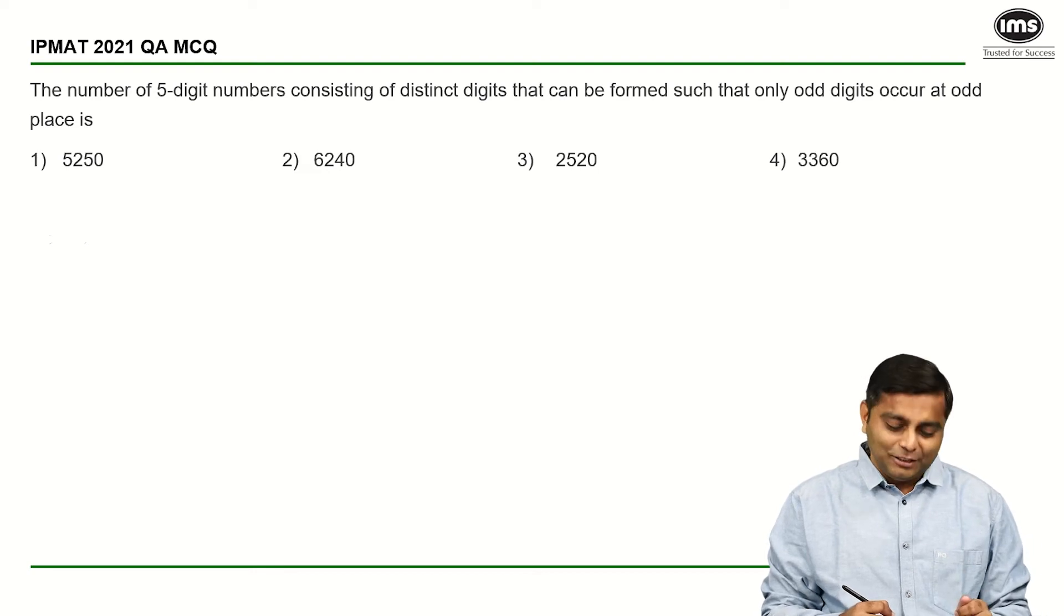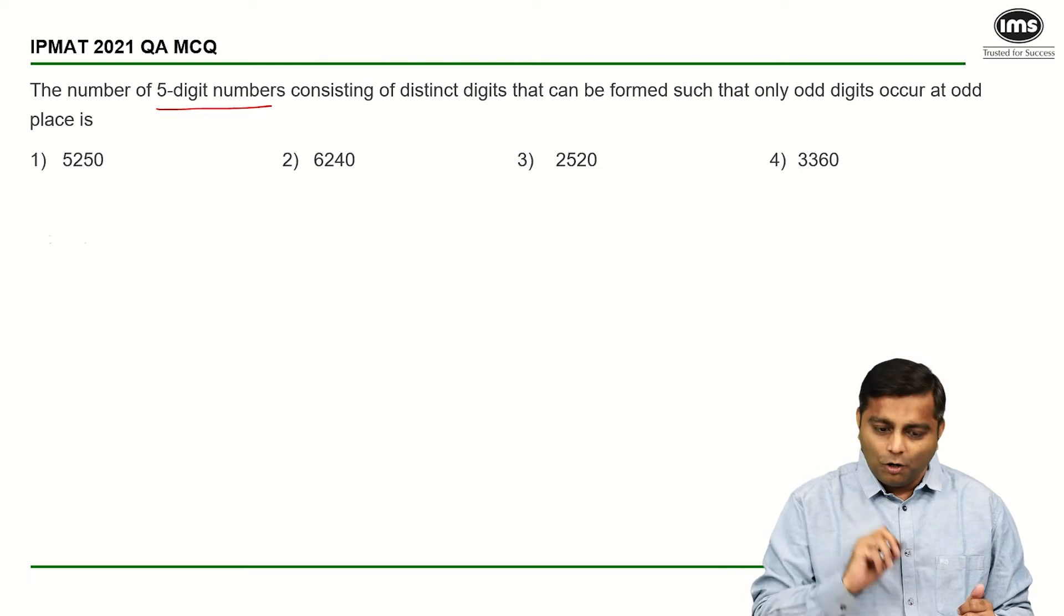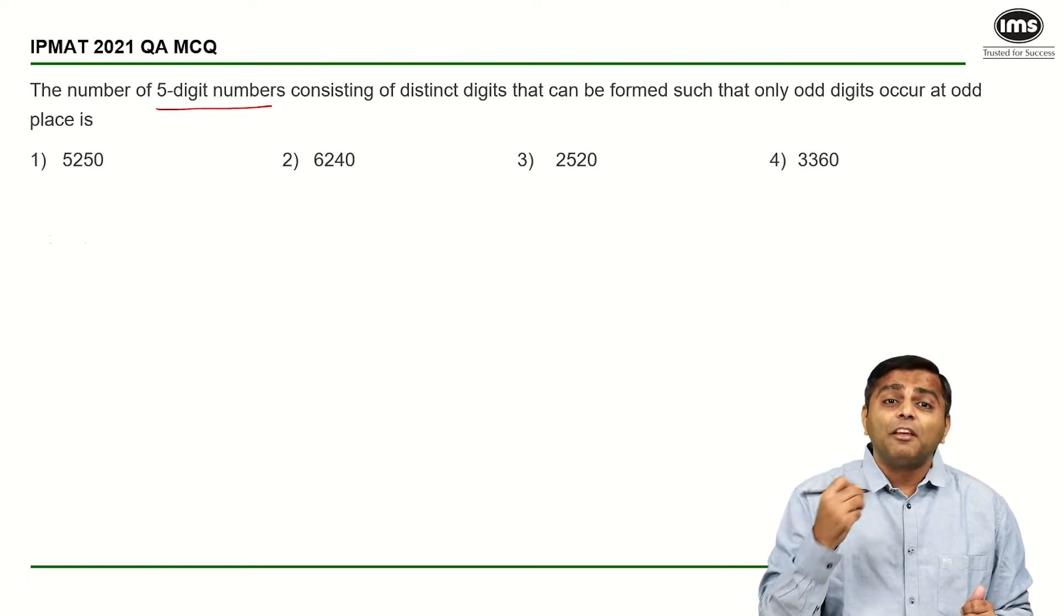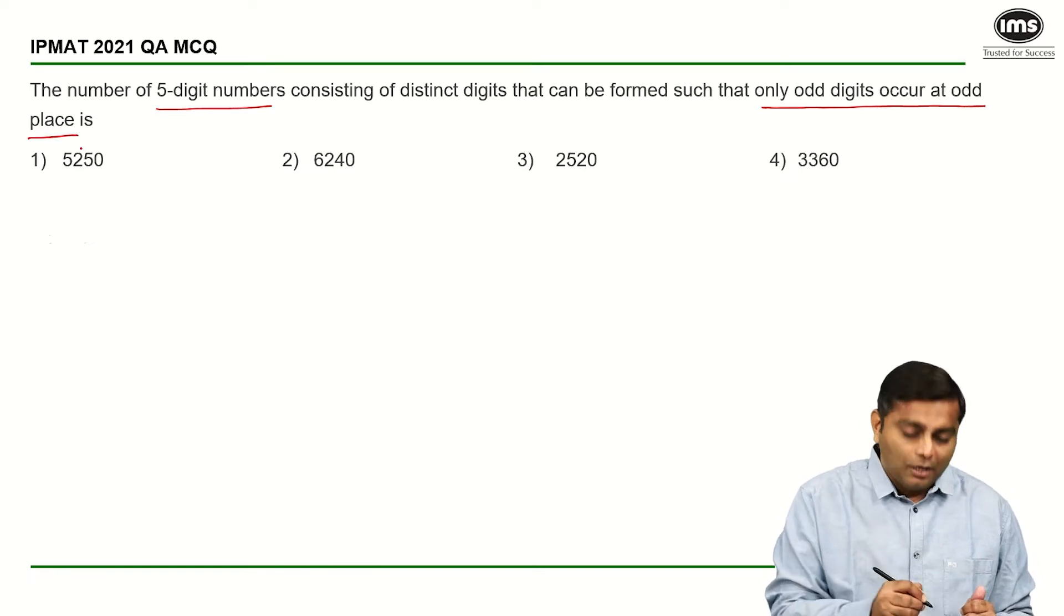Okay, so moving on to the solutions. They've asked for 5-digit numbers consisting of distinct digits. So the digits are not repeated. And they've given a constraint. What is that constraint? Only odd digits can occur at odd places.